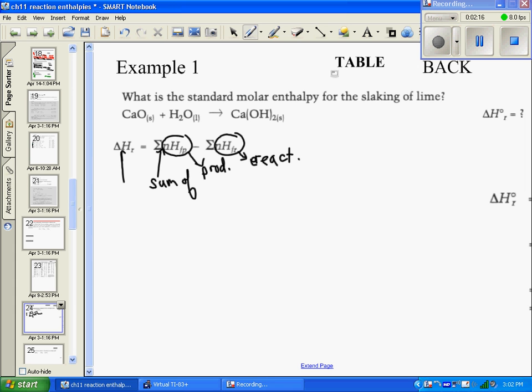Okay, so we've gone through it twice, let's get to the point. Here we've been given the reaction for the slaking of lime, where calcium oxide and water react to form calcium hydroxide. We're looking for the enthalpy of the reaction. How are we going to get that?